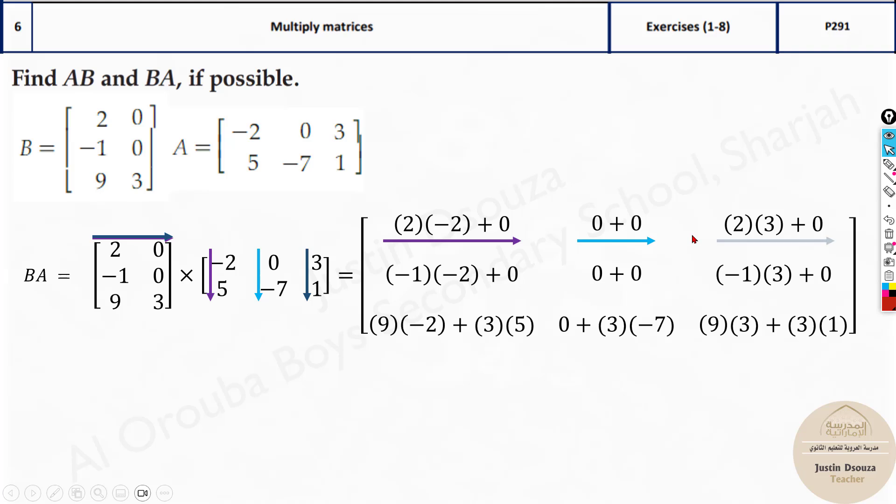First row with the third column and there we go. And same thing second row first column and it just continues. It's a very simple thing. Whereas the same thing is already done to you in the calculator and we get this answer.